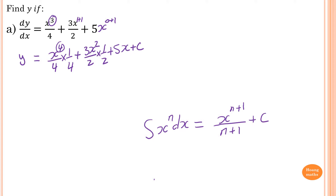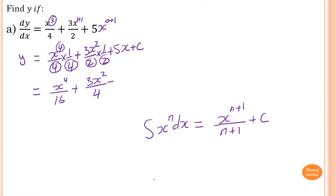Now, all I need to do is just simplify this together. So this 4 times 4 is 16, so x to the power of 4 all over 16. Add 2 times 2 is 4, so 3x squared all over 4, plus 5x, and add a constant, which is c.